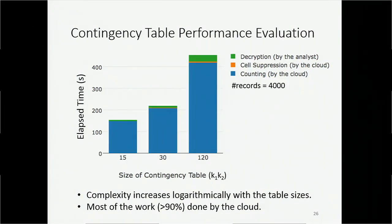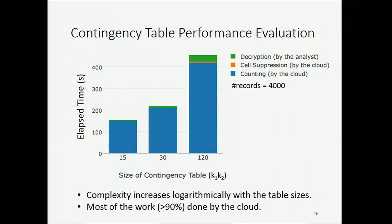Here are the experimental results of our contingency table protocol. We measure execution time in three parts: the time for counting, the time for doing the suppression, and the time for doing the decryption. We can see that most of the work is done by the cloud, and the analyst only needs to do about 10% of the work for decryption.